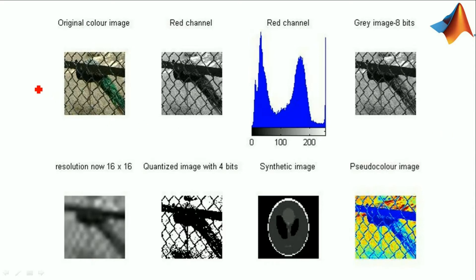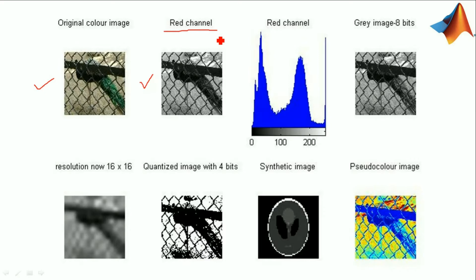This is the original color image, which is converted to a red channel image. Generally, for a color image, we have three planes: red plane, green plane, and blue plane. Here we are extracting the red plane, which we are calling the red channel image. After that, for this red channel image, we will obtain the histogram.